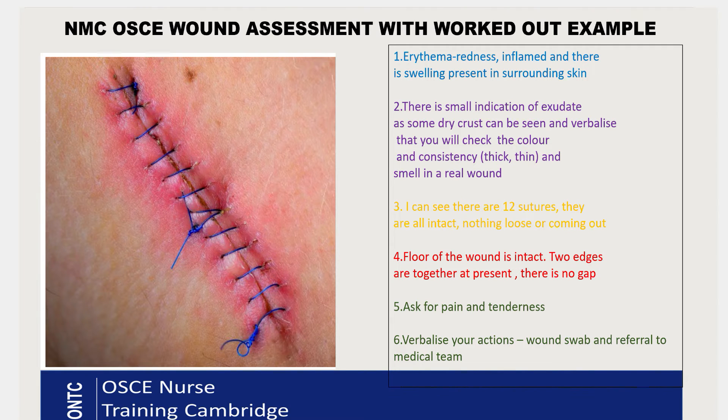Looking at this wound, it is showing some signs of early infection. So we're going to verbalize the actions: I will take a wound swab, send it to pathology, refer the patient to the medical team, and if the wound swab comes back positive I can refer the patient to the tissue viability team. I will document everything accurately about this wound assessment in the patient notes, then do final hand hygiene and reassure my patient — and that would be the end of the station.